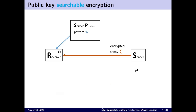In a searchable encryption scheme, the service provider can query the receiver with such a pattern and get a trapdoor that allows him to learn the presence of this pattern and know their information.